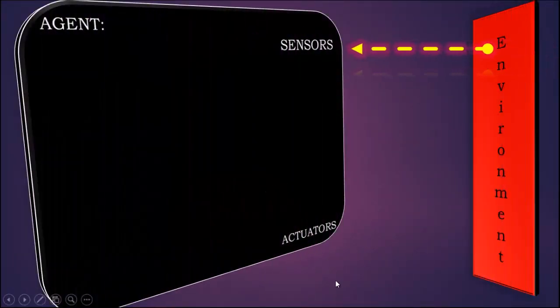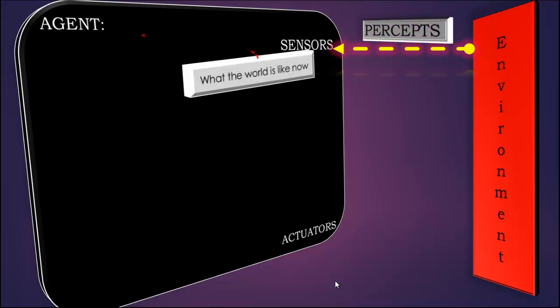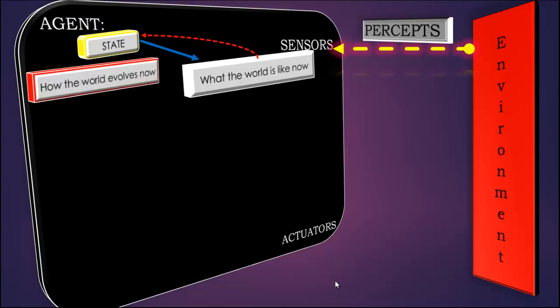The goal-based agent takes input from the environment through its sensors in terms of percepts. The agent asks its sensors what the world is like now. Then the status of the environment goes to the agent's internal state, and it checks how the world evolves and what its actions will do - that is, how its actions will affect the agent's performance.